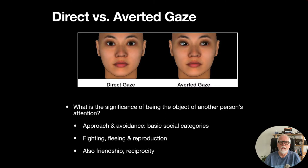If someone looks right at you, you know they're paying attention to you — this affects whether you want to approach or avoid them and connects to basic social categories about whether this person is in our group, involves fighting or fleeing, or reproduction. Direct gaze might suggest the person likes or is attracted to you. Averted gaze could tell you they don't want contact. All of this is also affected by friendship and whether you have a reciprocal relationship with the person.